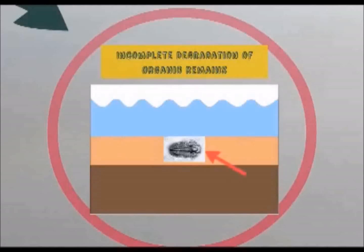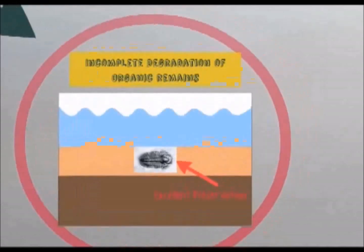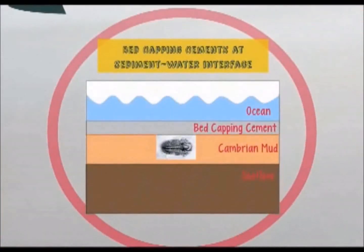It is thought that the presence of bed-capping cements at the sediment-water interface in Burgess Shale-type burying beds may have acted as a barrier, reducing porosity at the bed tops and restricting the diffusion of oxidants into the sediment. This, in turn, retarded the normal processes of microbial decomposition and facilitated the extraordinary preservation of soft-bodied fossil remains.